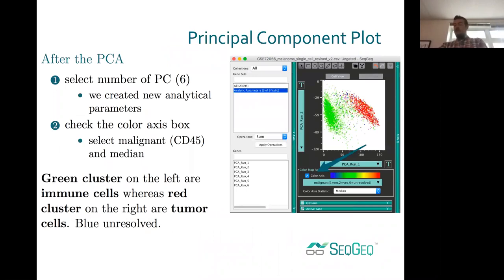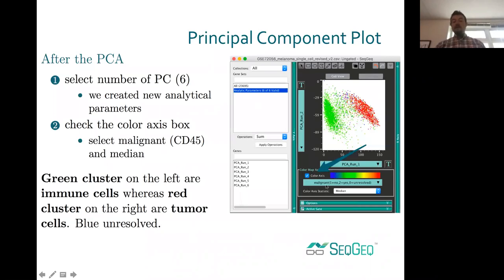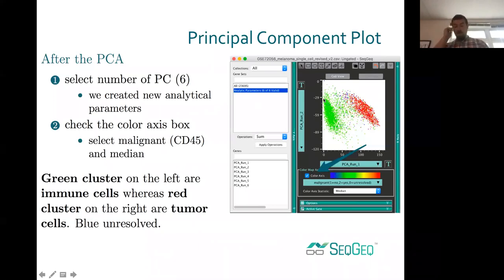After running PCA, SeatGeek displays the first two principal components describing the widest amount of variance. This is the melanoma demo dataset that comes with SeatGeek when you download it. We get nice separation within the first two principal components immediately. If we color map by the categorical malignant parameter — determined by flow cytometry — malignant cells with a value of 2 turn bright red, and non-malignant cells with value 1 turn bright green — those are T cells, B cells, and NK cells.